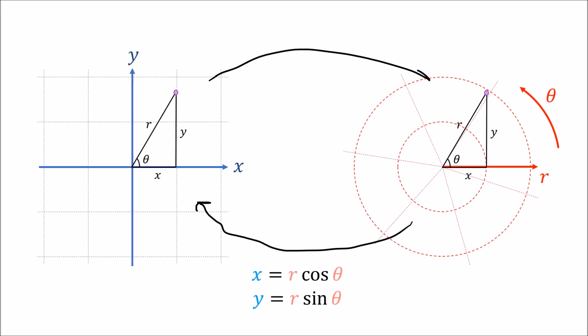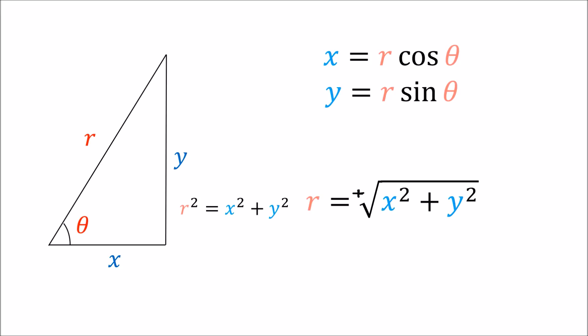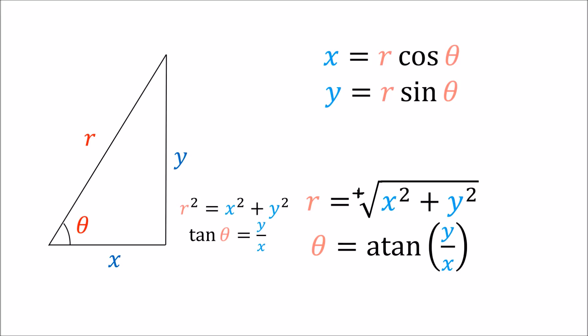But what about the other direction, from Cartesian to polar? From Pythagoras's theorem for right-angle triangles, x squared plus y squared equals r squared, so r equals the positive square root of x squared plus y squared. Also, tangent equals opposite over adjacent, so tan theta equals y over x, meaning theta equals arctan of y over x, where arctan is the inverse function of tangent. These equations help us convert from Cartesian xy coordinates into polar r theta coordinates.